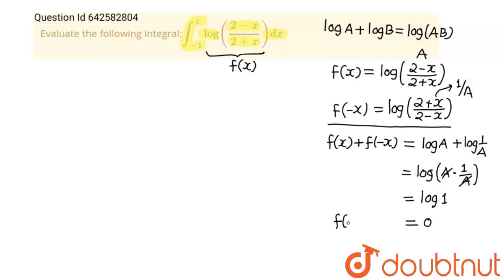So what is this? f(x) + f(-x) is equals to 0. Now see, I am going to tell you one property: integration from -a to a of f(x)dx is equals to integration from -a to a of f(-x)dx.